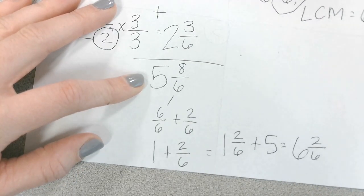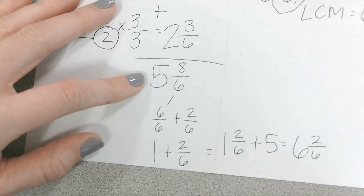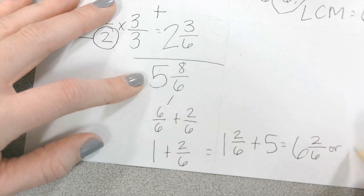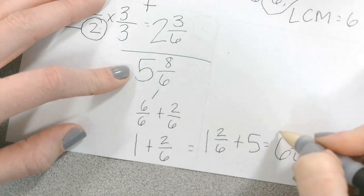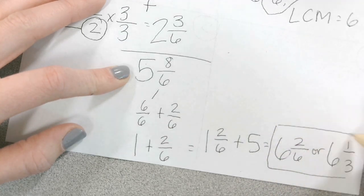Does anyone know what 2 6 is also equivalent to if we were to write this in simplest form? Oh. 1 third. Hmm? 1 third. It could also be written as? 1 third. 6 and 1 third. Either of these answers are good.